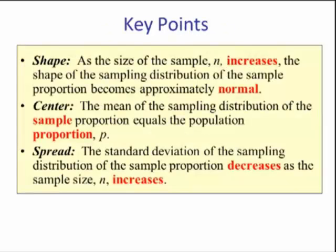Here are some key points about the distribution of sample proportion. As the sample size n increases, the shape of the sampling distribution of the sample proportion becomes approximately normal. The center, the mean of the sampling distribution of the sample proportion, equals the population proportion p. The spread, the standard deviation of the sampling distribution of the sample proportion, decreases as the sample size n increases.